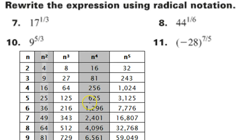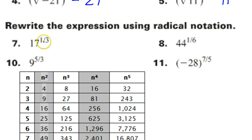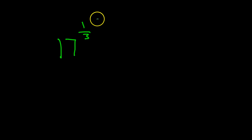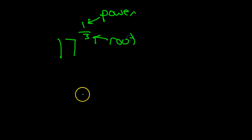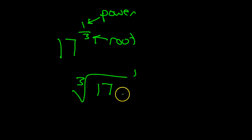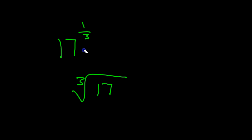For problem 7, we're going the other way: 1/3 power is the same thing as cube root. So 17 to the 1/3 power is the same thing as cube root of 17. I can think of 1 as the power and 3 as the root — the power is 1 but we don't need it, so it's just cube root of 17. It's easier to just put in your brain that 1/3 power equals cube root.